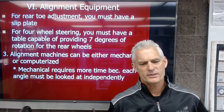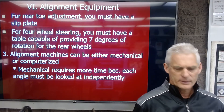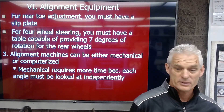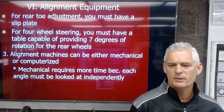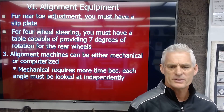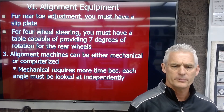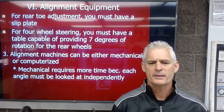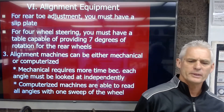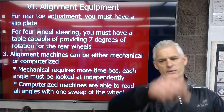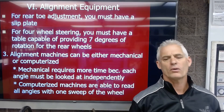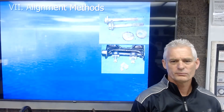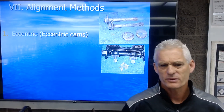For four-wheel steering, the rear turntables must provide seven degrees of rotation. Alignment machines can be mechanical or computerized — everyone uses computerized today. Computerized machines read all angles with one sweep of the wheel, while mechanical machines require each angle to be measured independently, taking much more time.